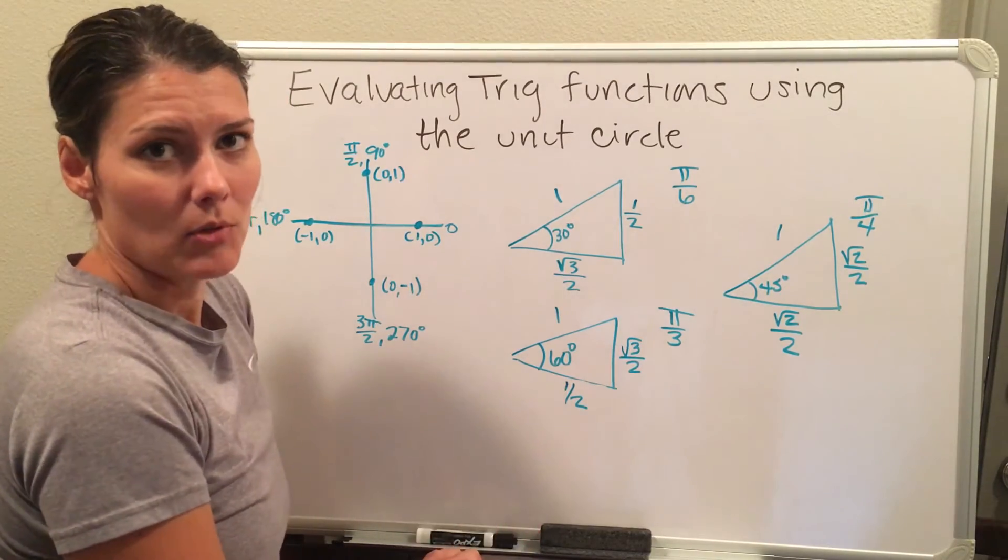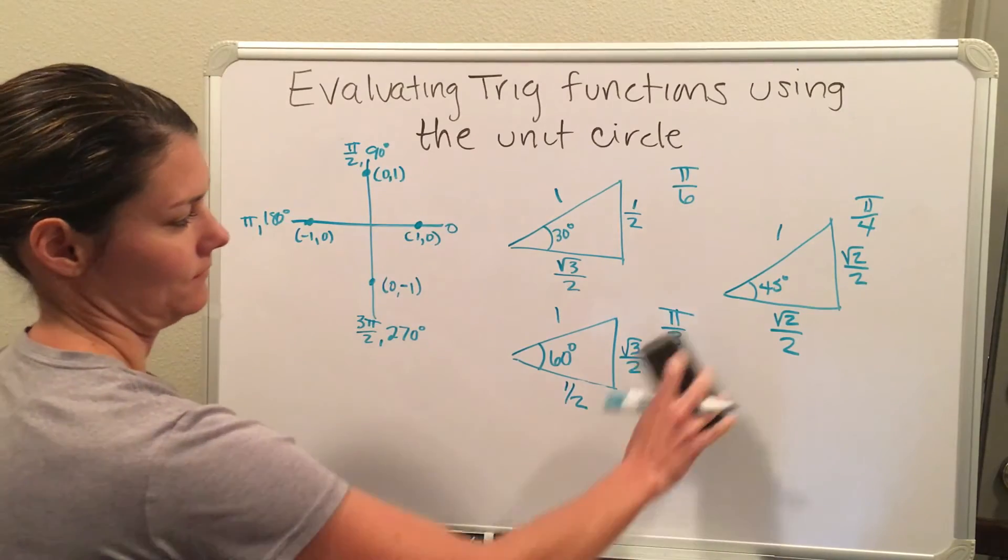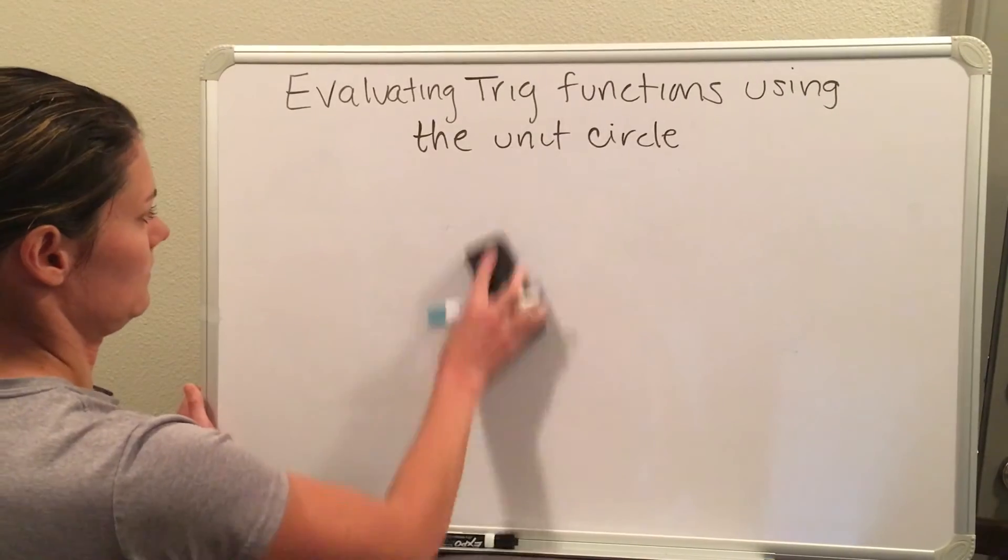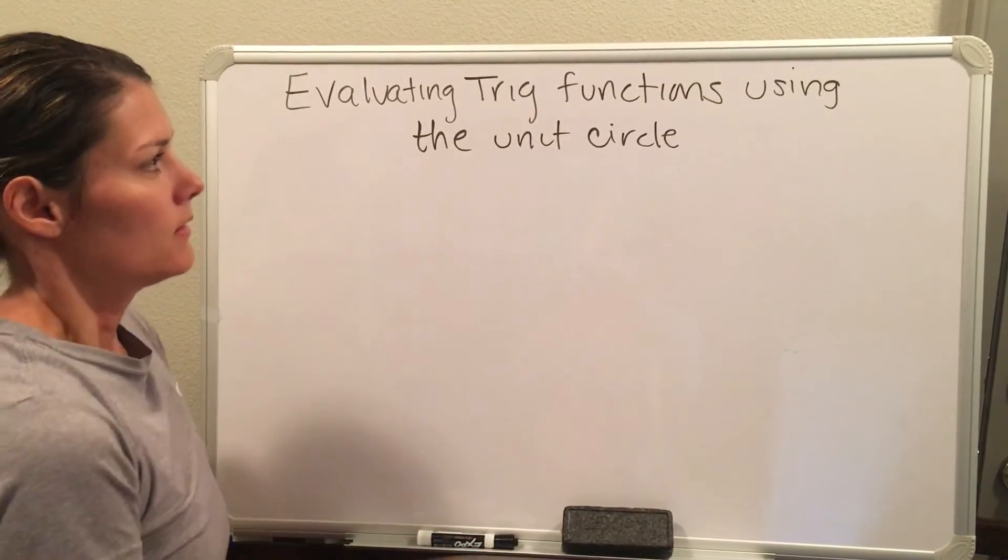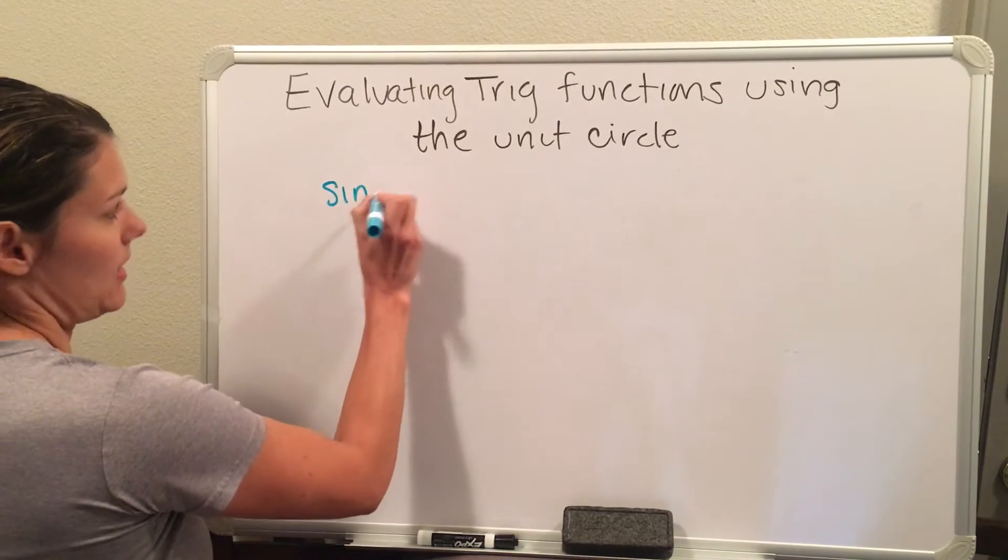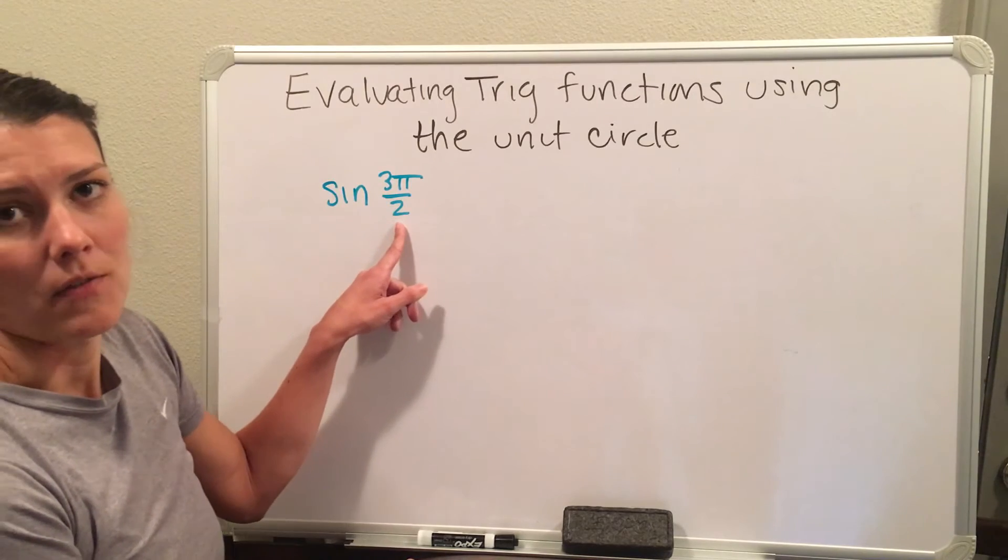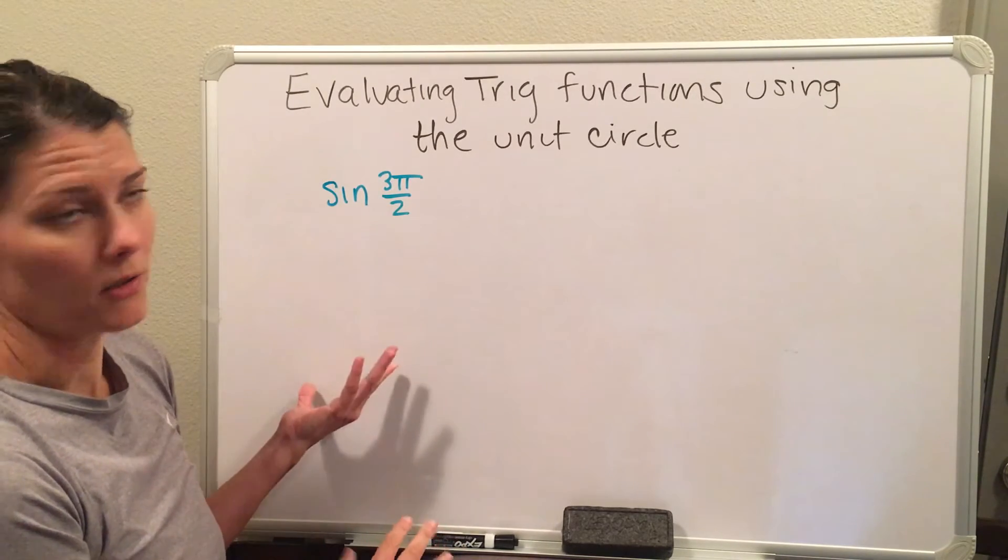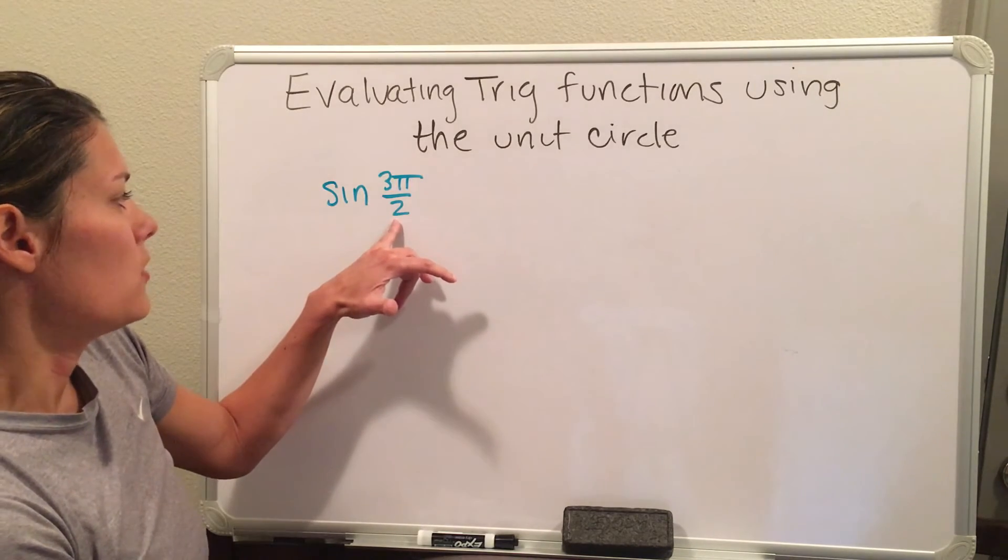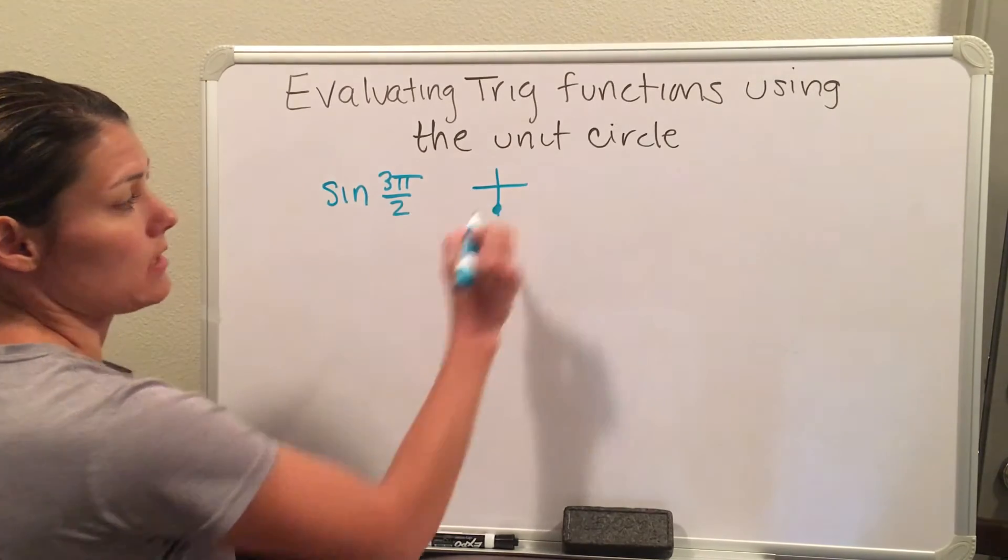So let's just do some practice problems, and I will show you how to recreate your triangles. Let's say that you're doing a problem, and you need to evaluate sine of 3π over 2. First, you need to know where 3π over 2 is located on the unit circle. This is in radians, and 3π over 2 is one of my x or y axes, and I know that it's located right down here.